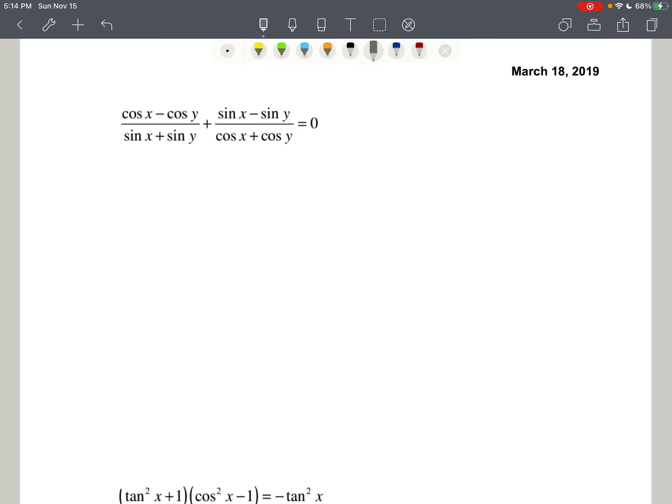So we're going to do the same thing that we normally do, and let's try and get a common denominator. So I have cosine of x minus cosine of y. That's a binomial, and that's over the binomial sine of x plus sine of y, and to have a common denominator, I'm going to need to multiply both the numerator and the denominator by cosine of x plus cosine of y, because that's what the second fraction has.